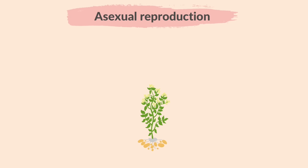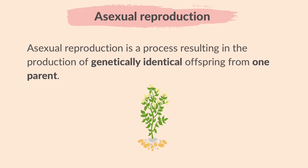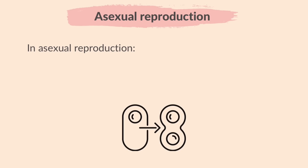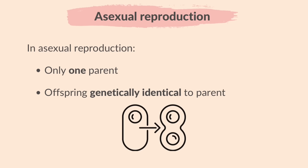Let's first learn about Asexual Reproduction. Asexual Reproduction is a process resulting in the production of genetically identical offspring from one parent. This type of reproduction occurs with just one parent. There is no mixing of genetic information, so offspring are genetically identical to the parent and each other, essentially making them clones.